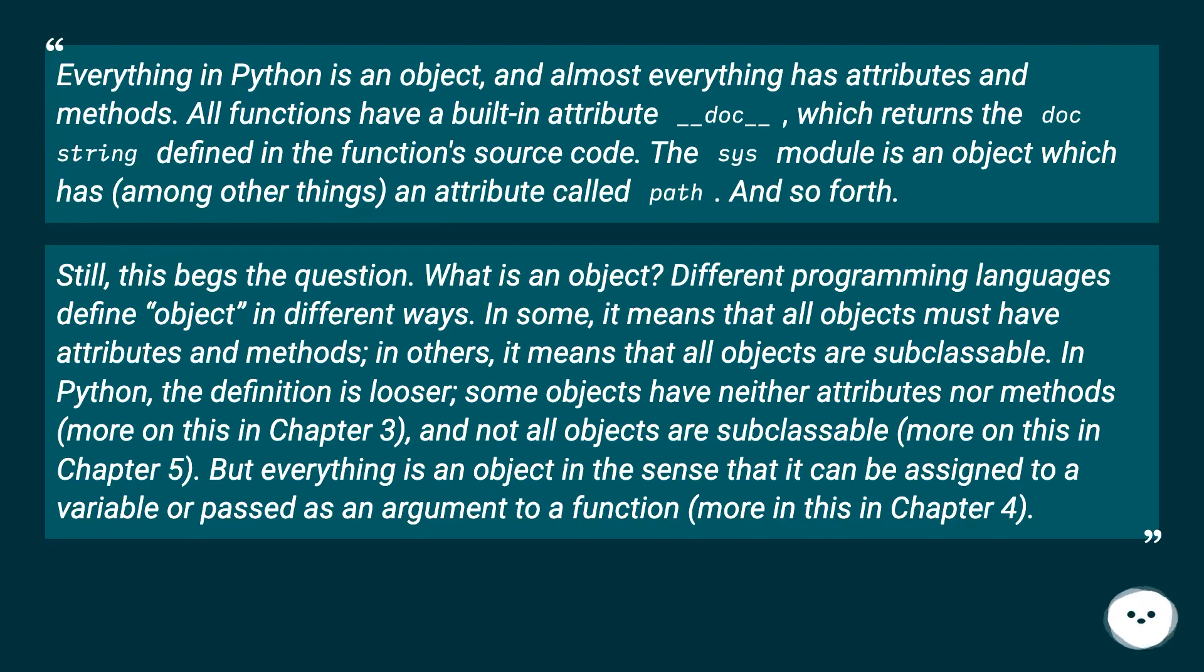Some objects have neither attributes nor methods (more on this in chapter 3), and not all objects are subclassable (more on this in chapter 5). But everything is an object in the sense that it can be assigned to a variable or passed as an argument to a function (more on this in chapter 4).